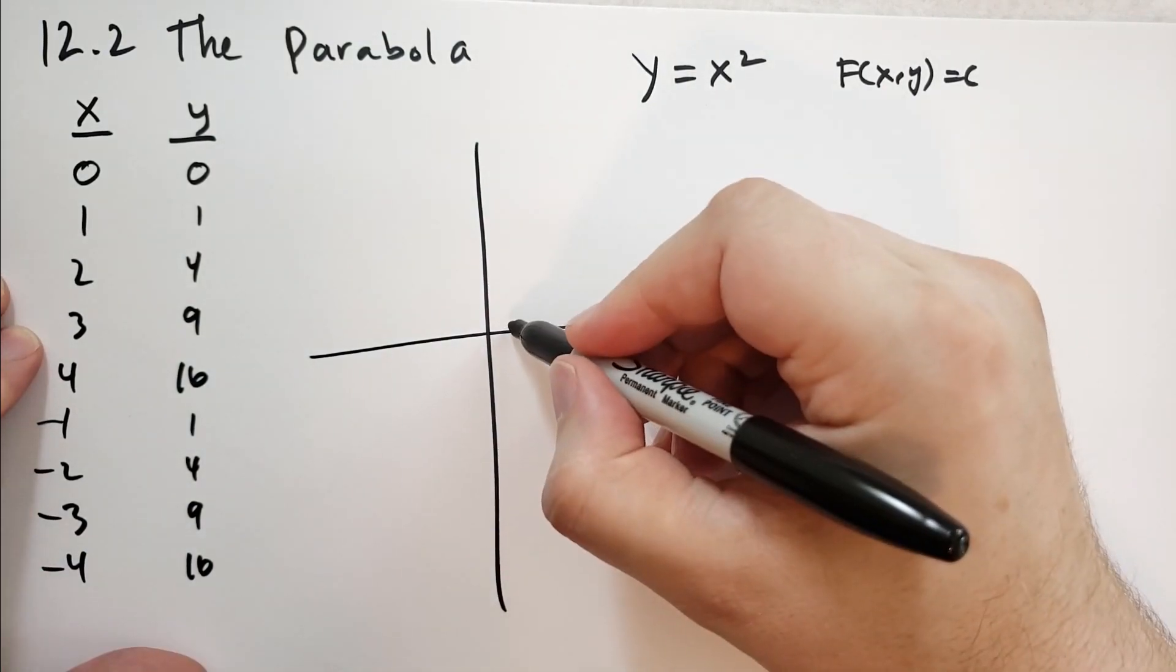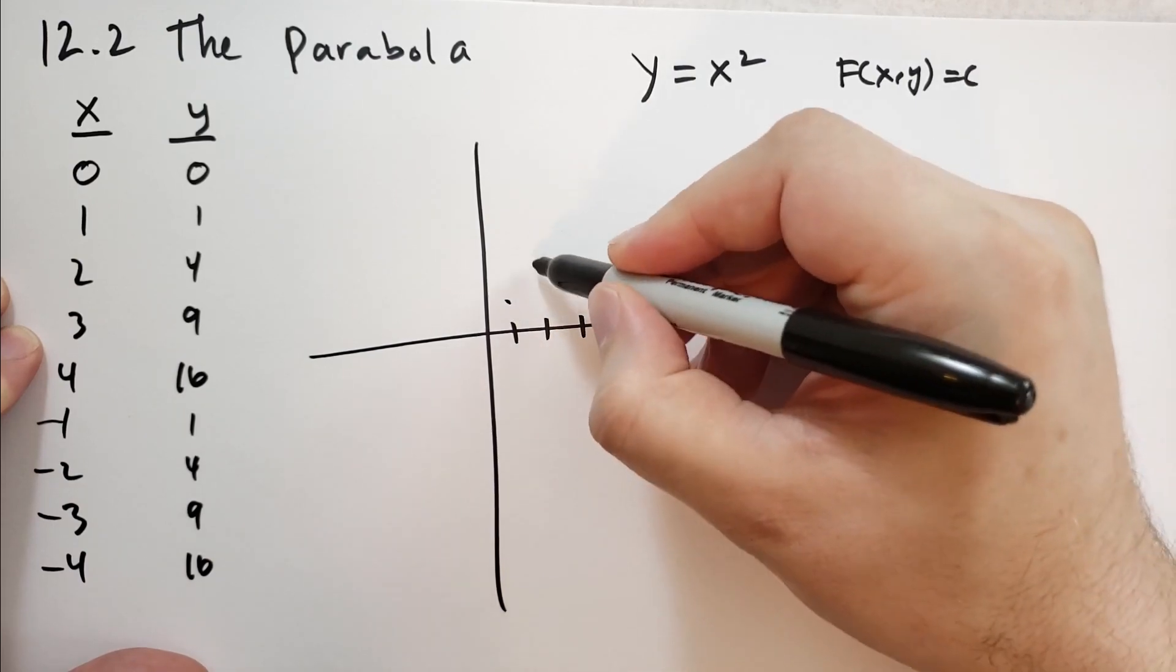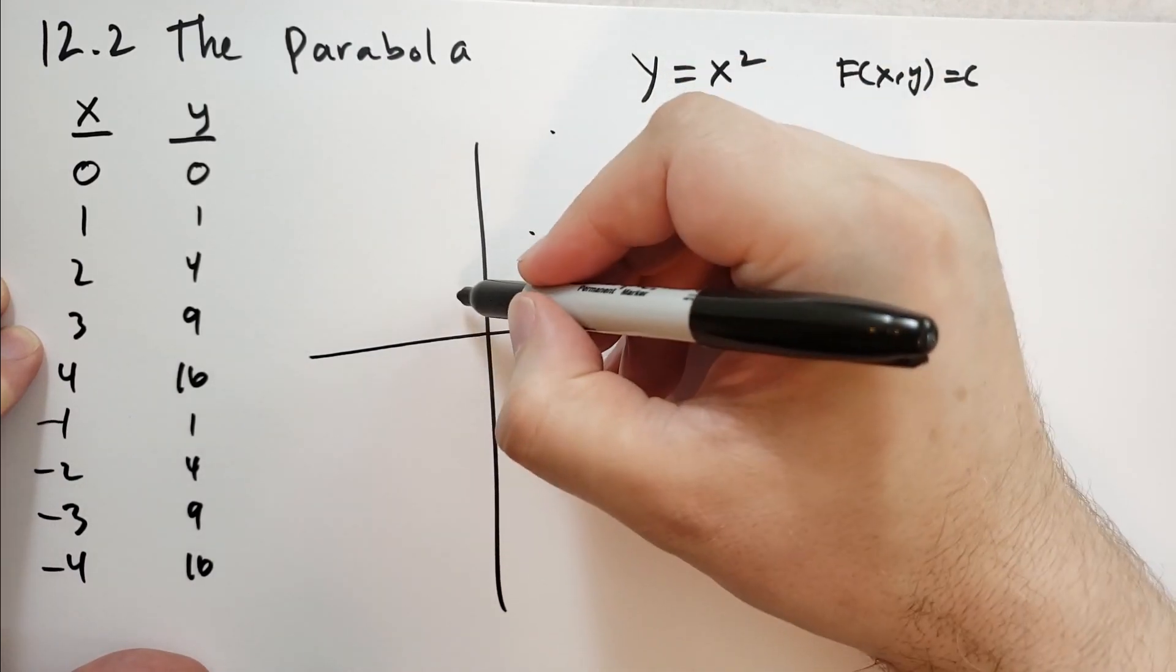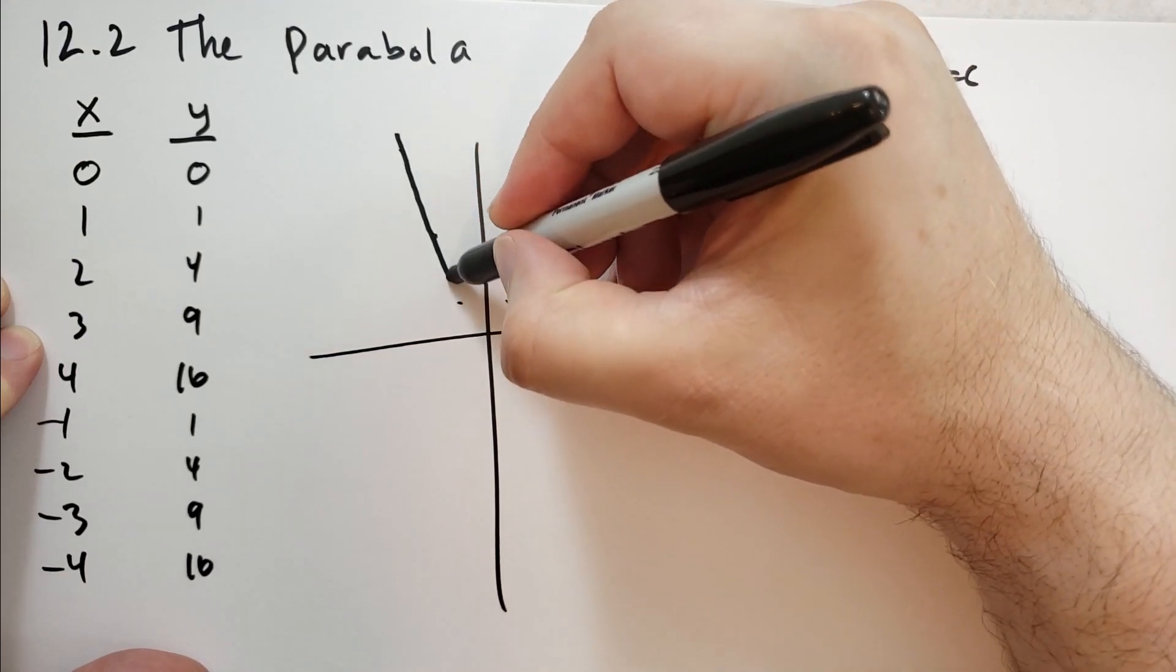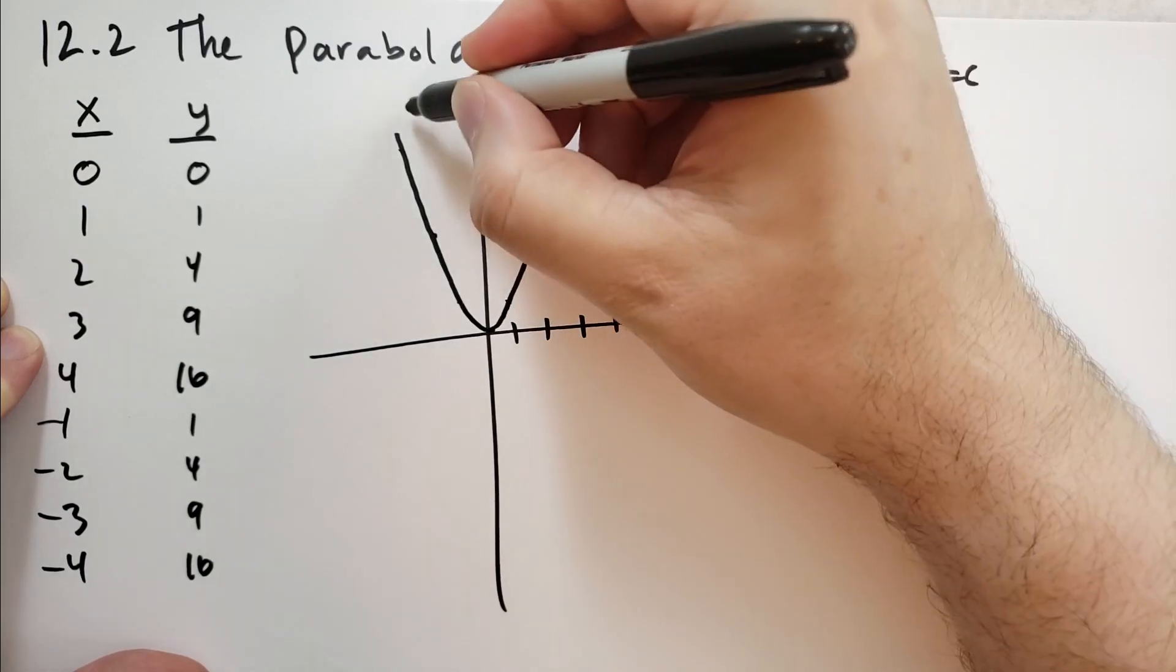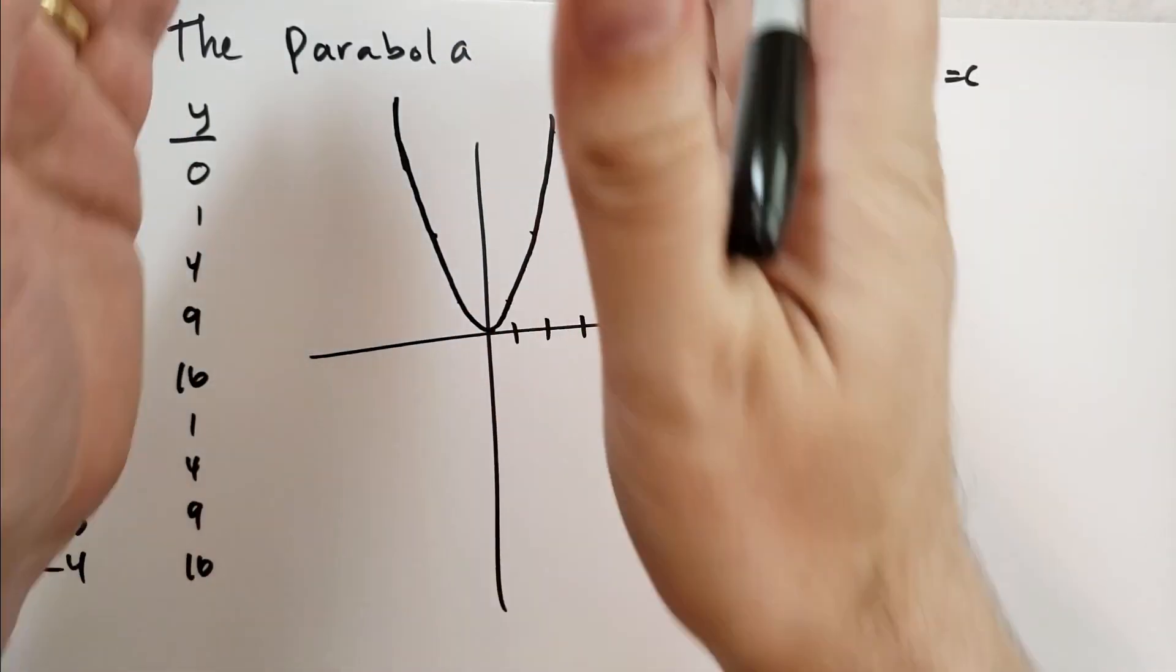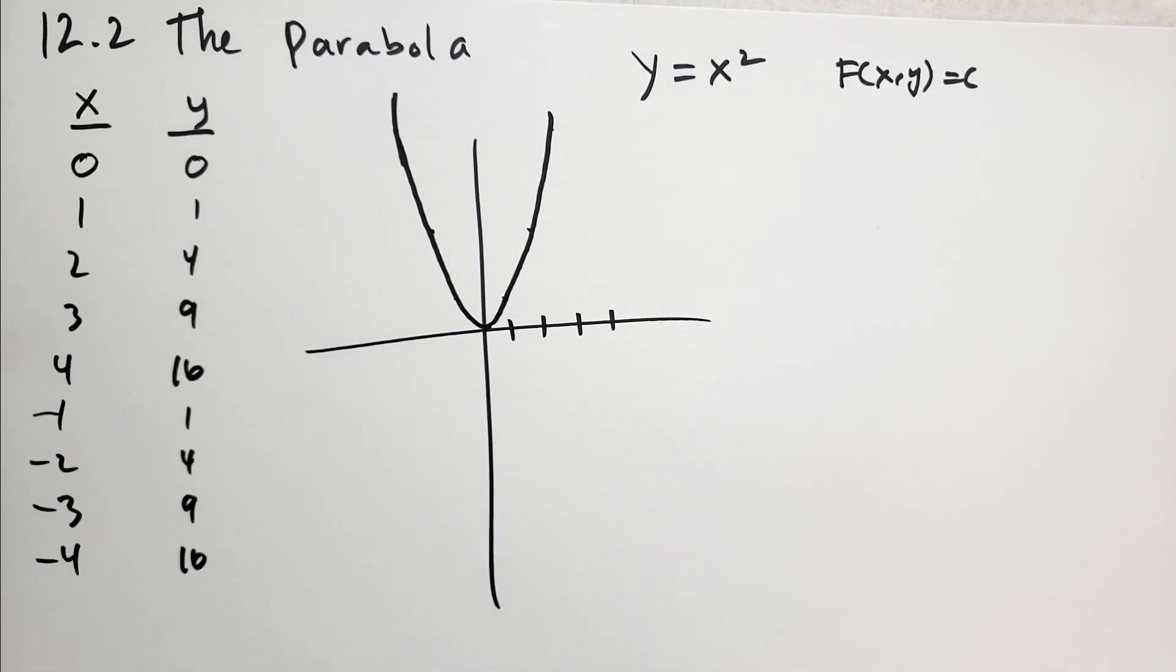So we draw this out like this. I am not being precise by any stretch of the imagination. So 1, 1, 2, 4, and it's going to shoot up like this on one side and down on the other. It's going to level out and then shoot back up in a curved shape. If you want an exact picture of a parabola, you can go to the internet or look in the book.